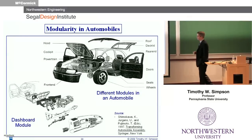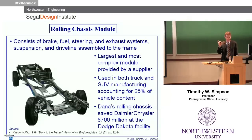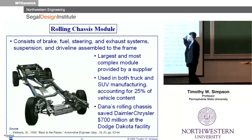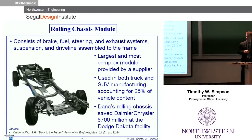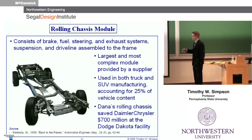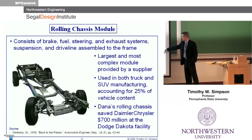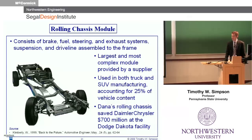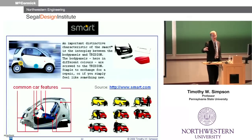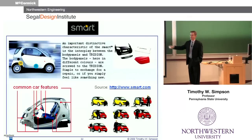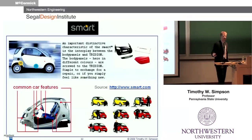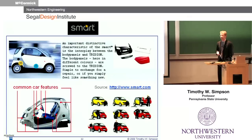Automotive is moving very heavily into the modular world to facilitate assembly. A good example: the rolling chassis module for Dana Corporation — very similar to the Volkswagen A platform concept — the common underbody that is reused. It represents 25% of vehicle content and saved almost three-quarters of a billion dollars for the Dodge Dakota facility. And probably the extreme: Smart cars, which we're starting to see in the U.S. The whole chassis is identical. The modularity comes in that you can very easily snap off the body panels, put on a different one, and you've changed your car from yellow to red in 10 or 15 minutes.